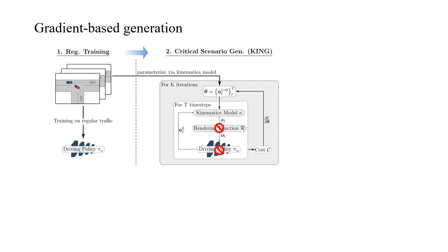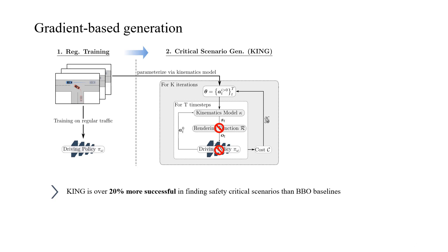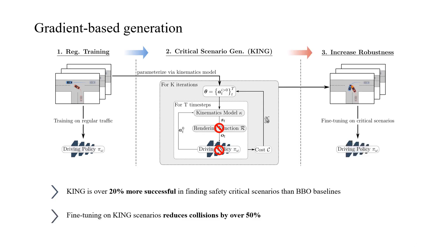The resulting generation procedure is over 20% more successful in finding safety-critical perturbations than black-box optimization-based alternatives. Additionally, we find that by fine-tuning on the scenarios generated by KING, we can improve the collision avoidance of an end-to-end imitation learning-based driving model by over 50%.